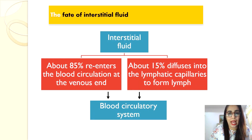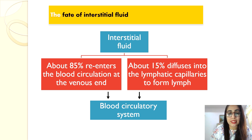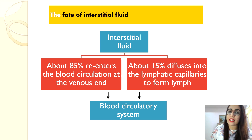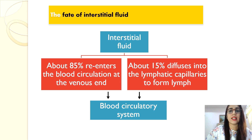There are two ways of reabsorption of tissue fluid. About 85% re-enters the blood circulation at the venous end, and about 15% diffuses into the lymphatic capillaries to form lymph, which is then transported back into the circulatory system.